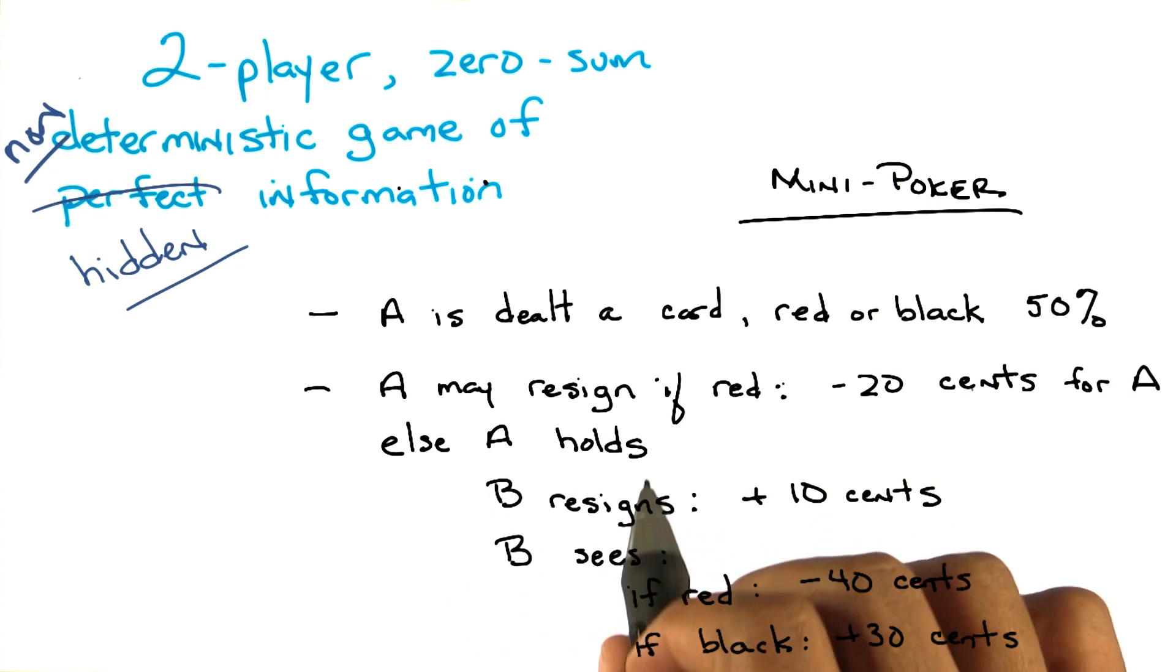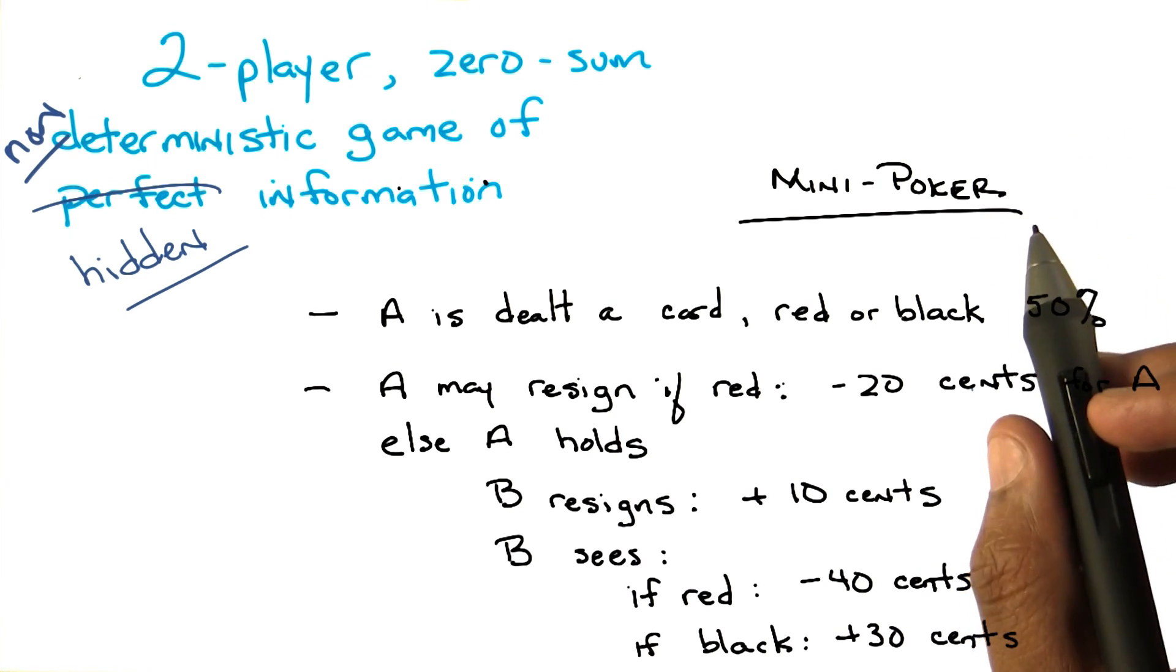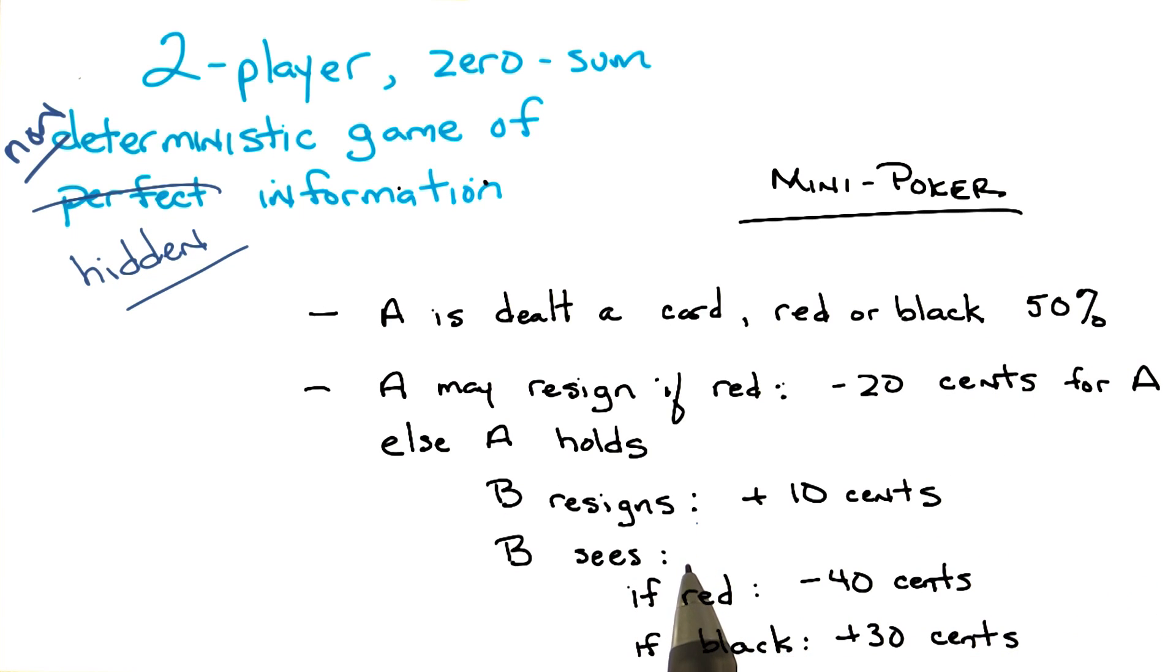Now, A can choose to hold instead, hold the card. That's requiring B to do something. So if A holds the card, B can either resign, or can demand to see the card. Now, if B resigns, then A gets 10 cents, regardless of the color of the card. That makes sense? Yep.